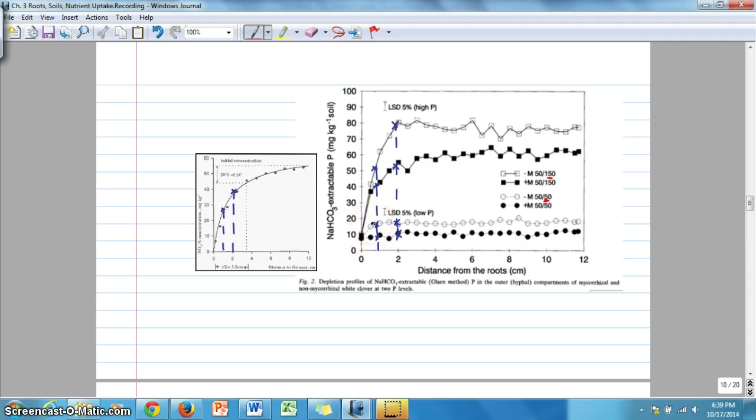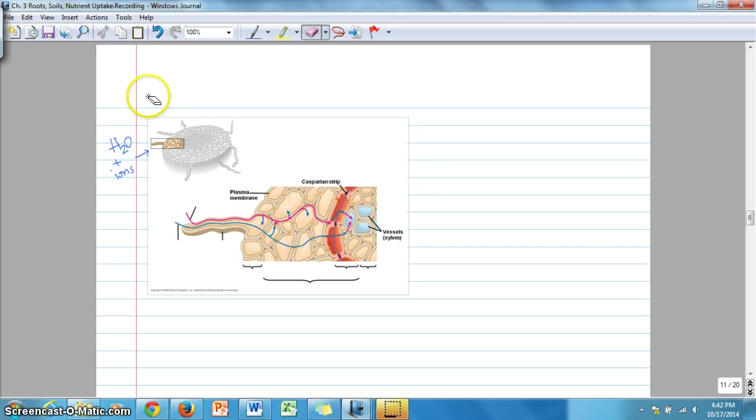So that's kind of one of the ways that we can compare depletion zones between different nutrients. Certainly higher nutrient concentrations are gonna affect that depletion zone. And also the presence of mycorrhizae are gonna affect that depletion zone as well. In fact, what we see is that with mycorrhizae and low nutrient availability for phosphorus, that that depletion zone is nearly removed.